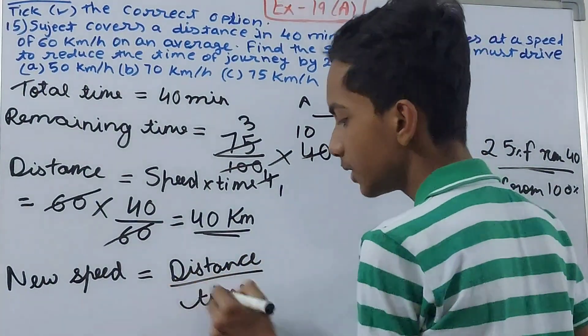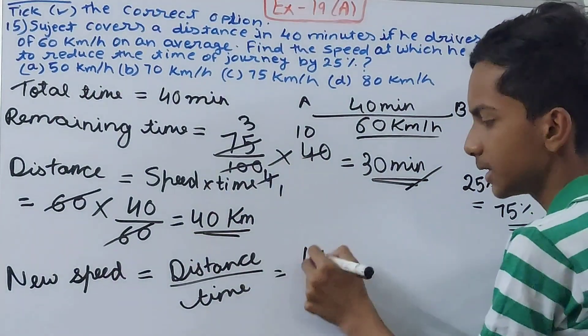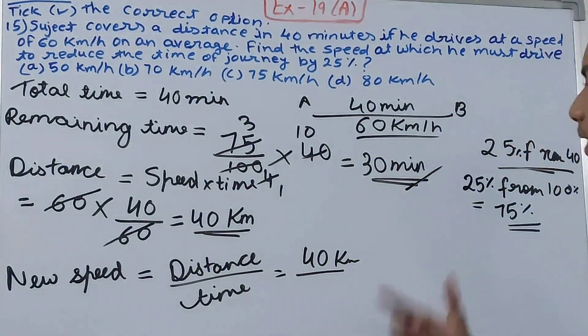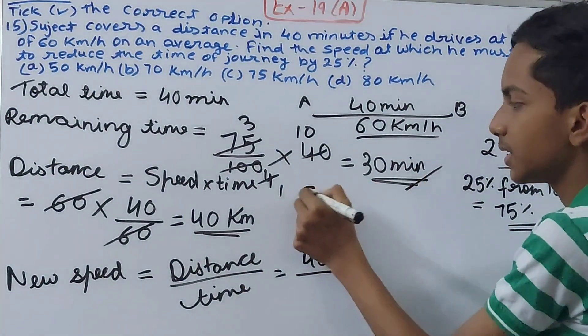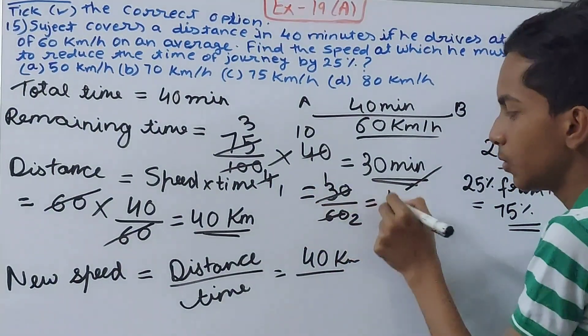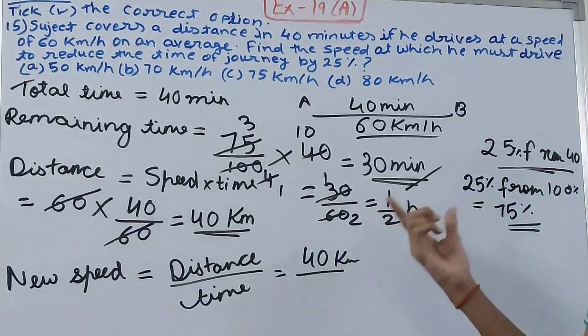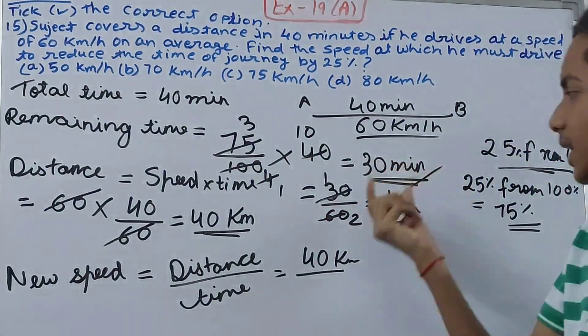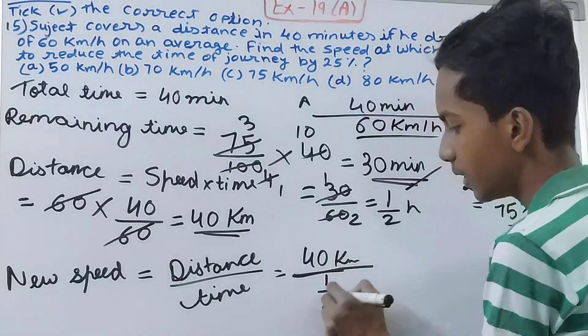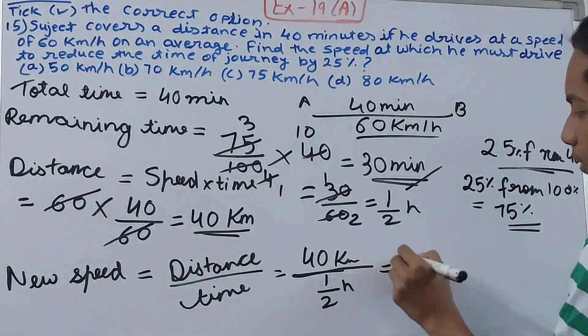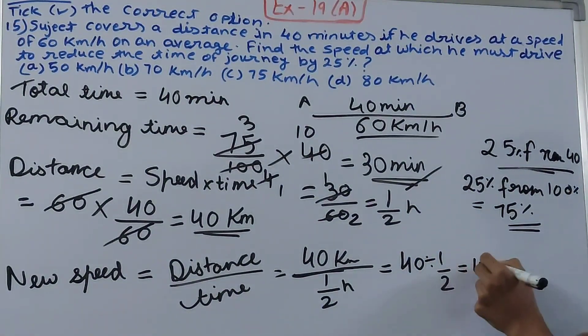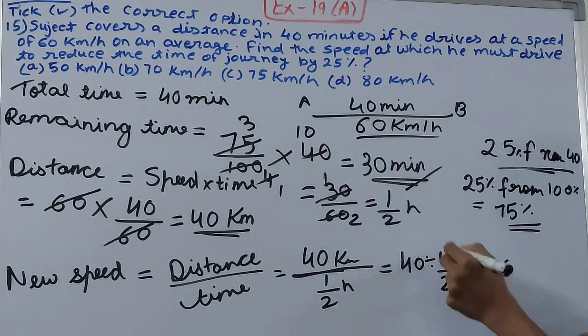Now the new speed equals distance upon time. We will input the values: distance is 40 kilometers upon time, which is 30 minutes. Again, convert 30 minutes into hours: 30 upon 60, so this will give you 1 by 2 hours. Don't forget to do this step, it's very important to convert minutes into hours.